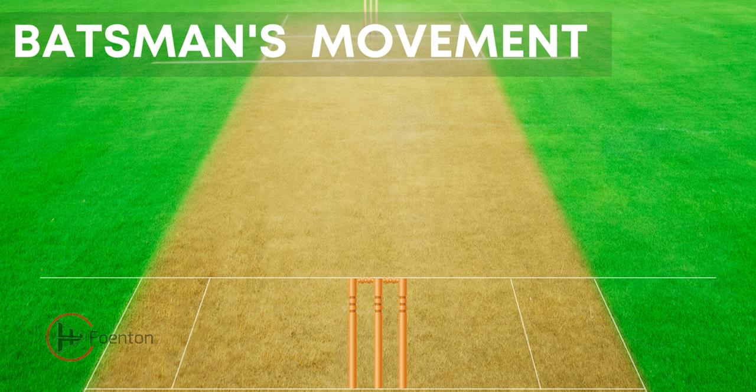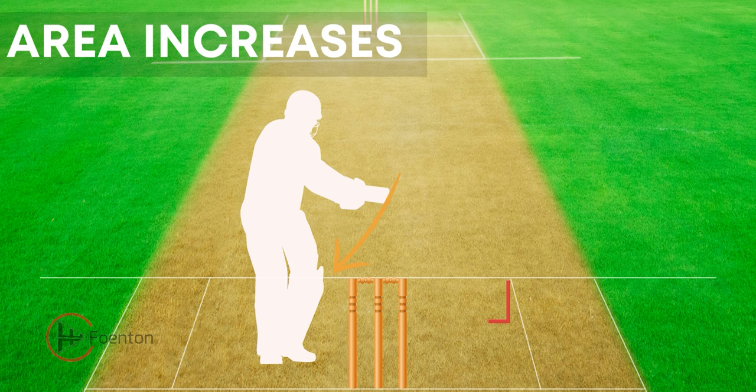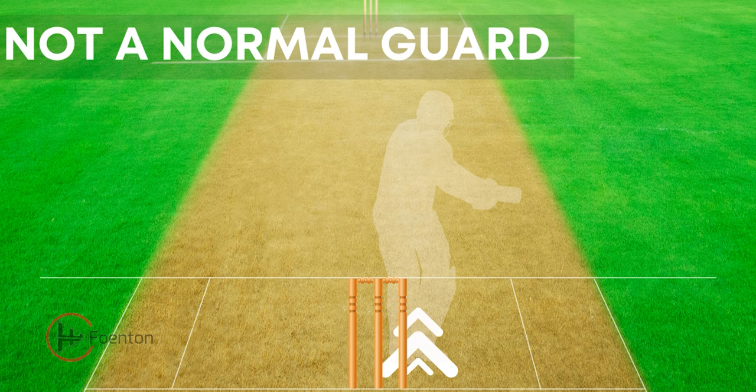Now let us look at batsman's movement and how umpires make their judgment. If the batsman is standing down the leg side, nothing changes for umpires in determining the wide ball when they look at the wide line guide. The area of reach increases for the batsman, and the bowler can still use the wide line as a guide to bowl. When the bowler bowls and the ball stays within or on the wide line guide, it will not be considered a wide ball.